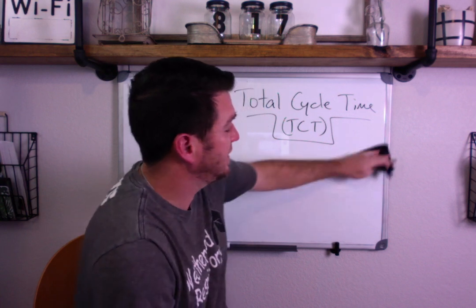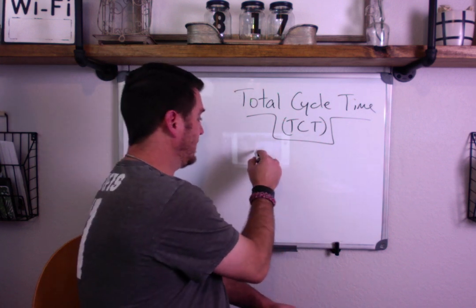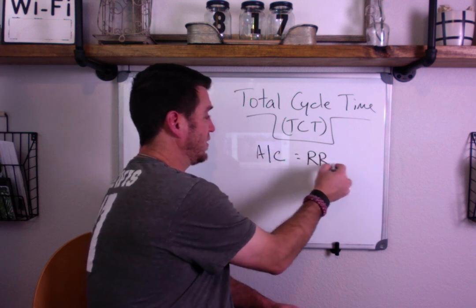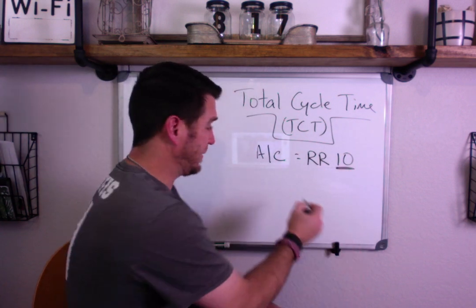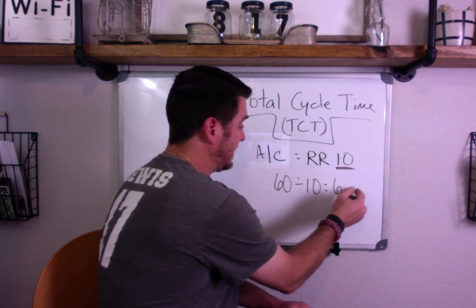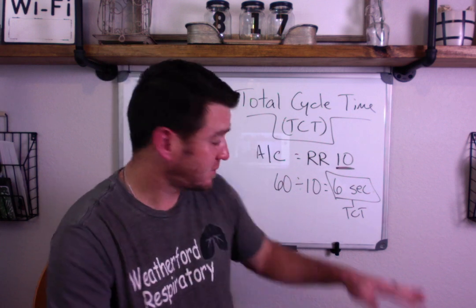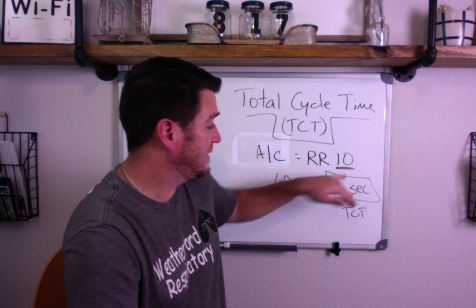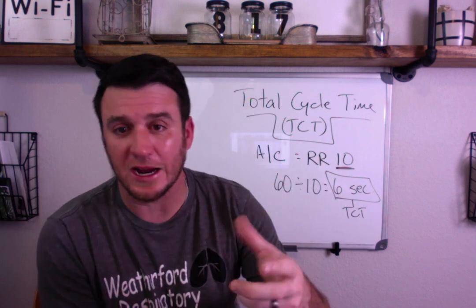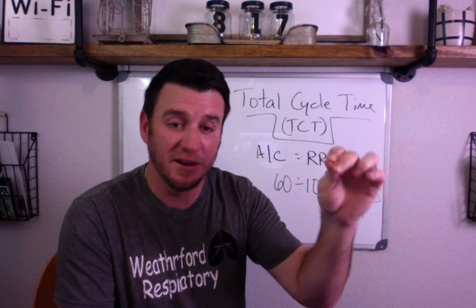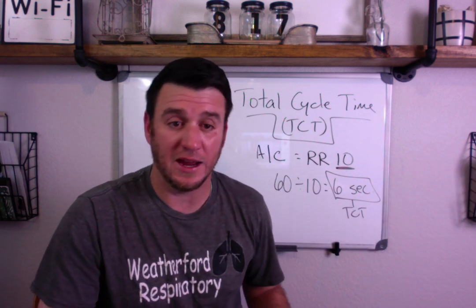There are a couple of different ways you can calculate total cycle time. The easiest way: if you're in assist control with a set respiratory rate of 10, that means there are going to be 10 breaths happening every minute. So we simply say 60 seconds divided by 10 equals 6 seconds — that's our total cycle time. That means there are 6 seconds for the breath to be delivered and fully exhaled before the next breath comes.